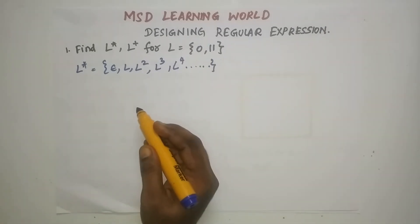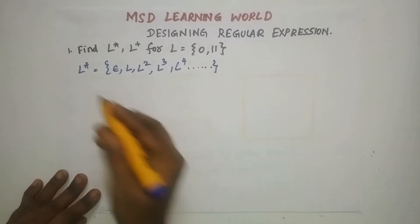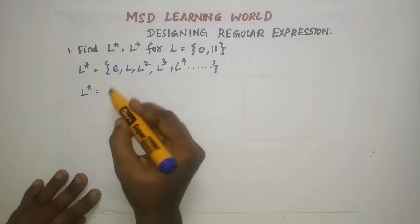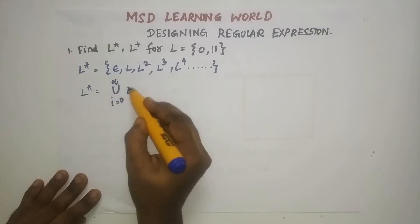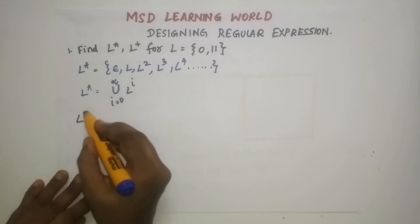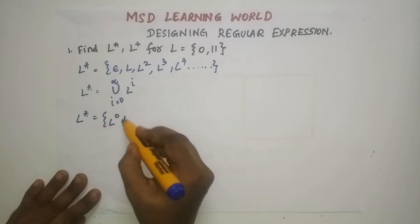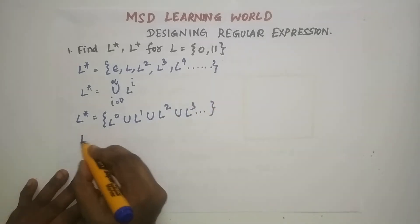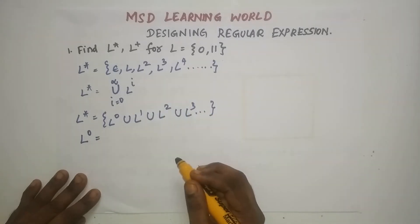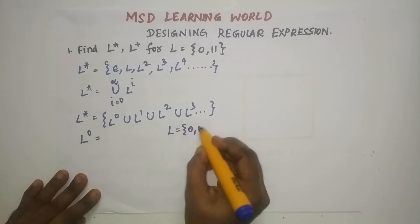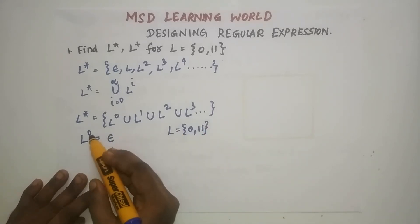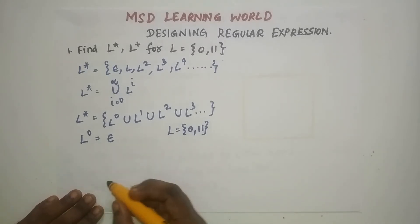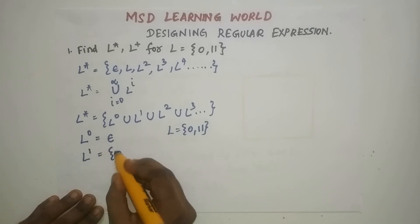Now, how are we going to create this L* closure for the given language? L* is nothing but the union of L^i for i = 0 to infinity. This means L* = L⁰ ∪ L¹ ∪ L² ∪ L³, and so on. L⁰ is nothing but ε — that is, if you don't have any 0 or 11, it is ε. Then L¹ means you will have {0, 11}.